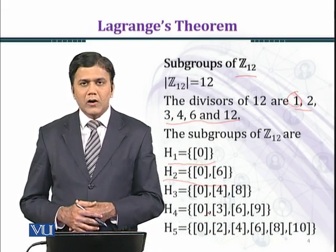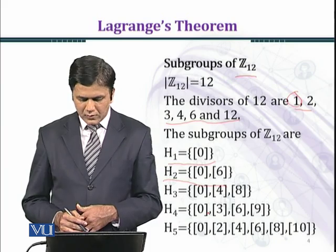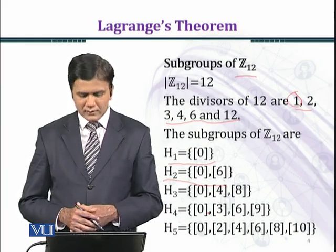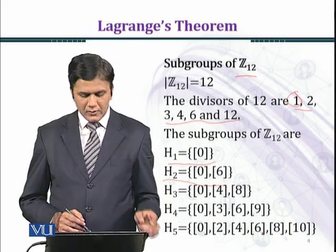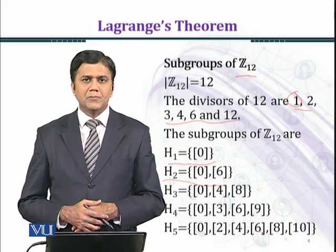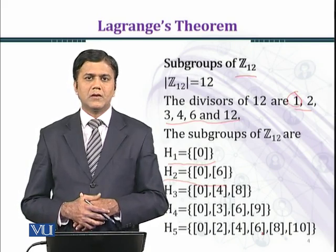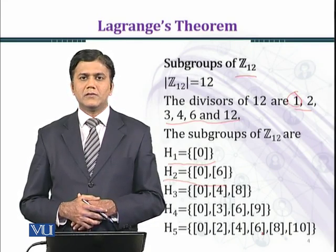And in H₅, you can see that we have 6 elements: 0, 2, 4, 6, 8, and 10. So in this way, we have found all the possible subgroups of Z₁₂ by using Lagrange's theorem. That's all about this introduction.